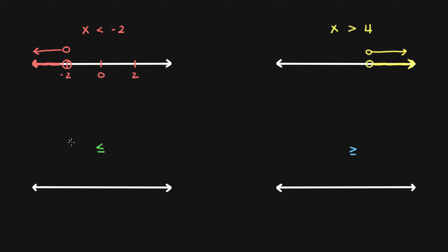If we have something like x is less than or equal to 3, and 3 is possibly right here, in this case we're going to have a closed circle. If we have greater than and equal to, or less than and equal to, then we'll have a closed circle like this. Since it's less than, we're going to be going to the left like this.